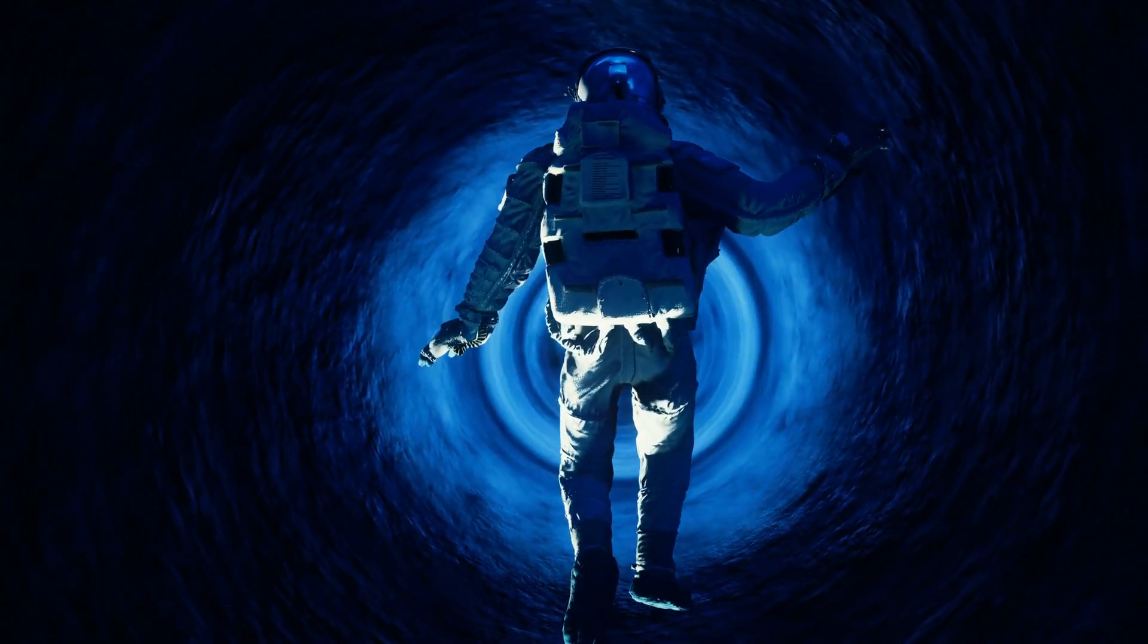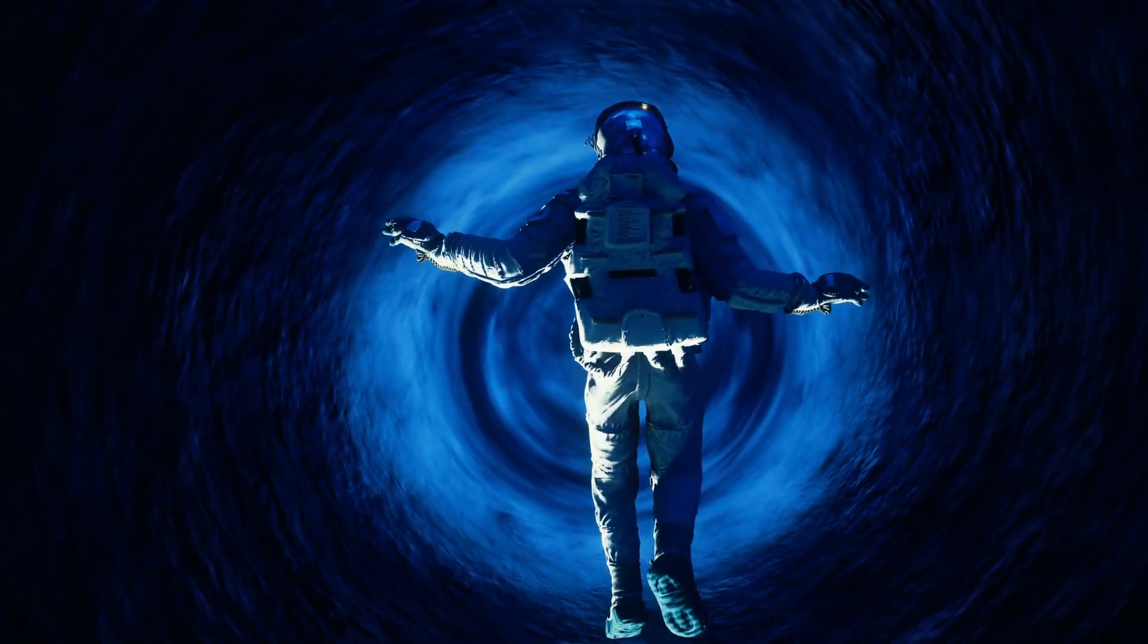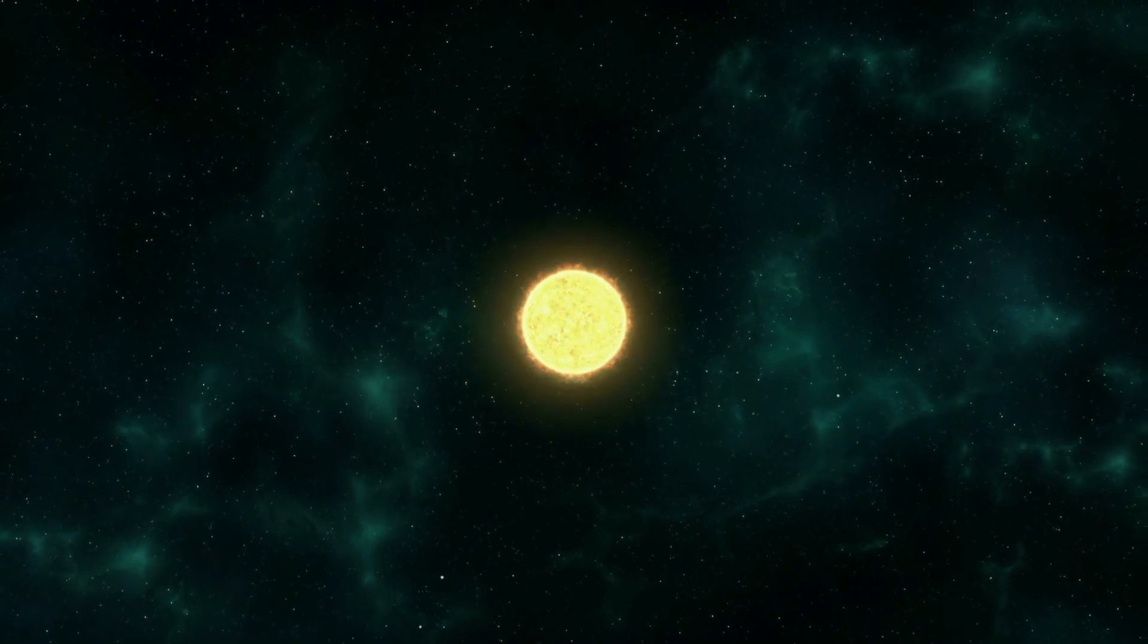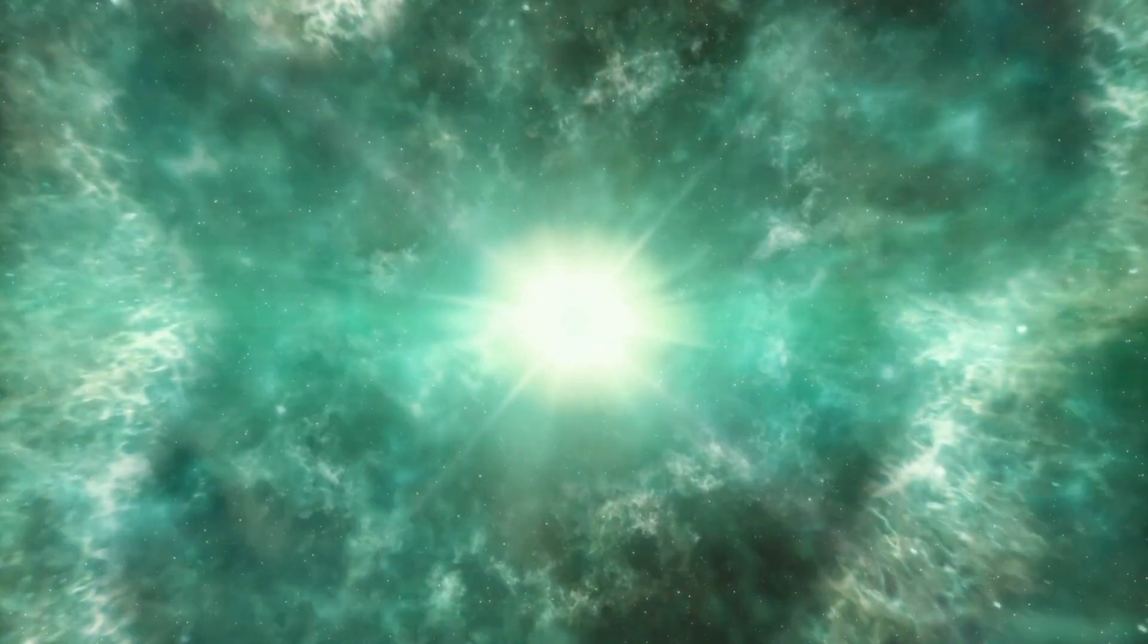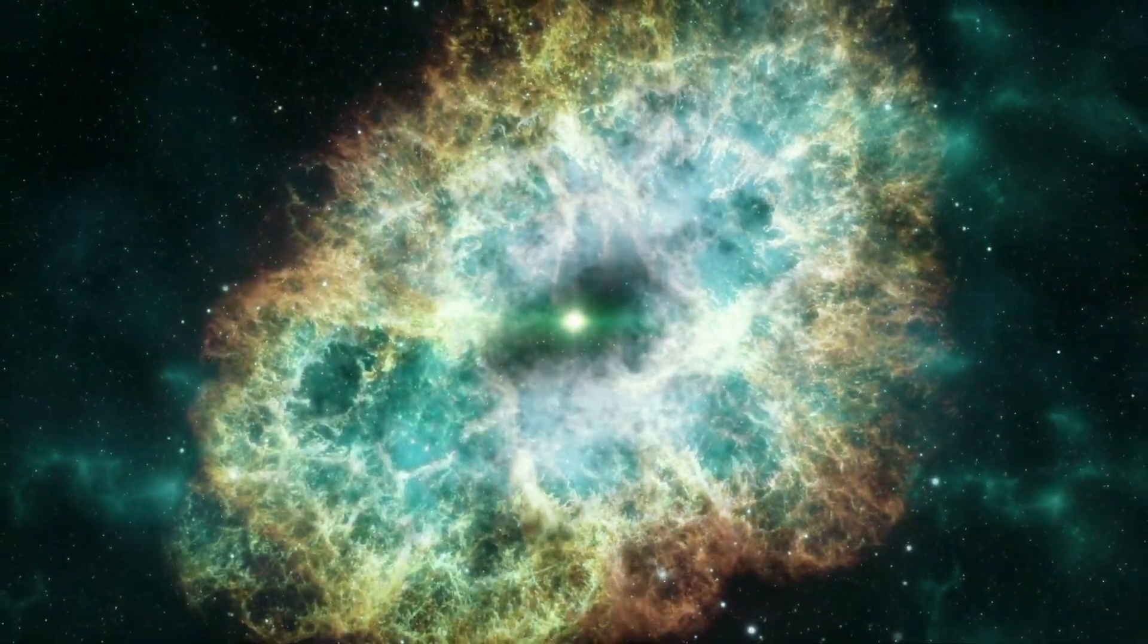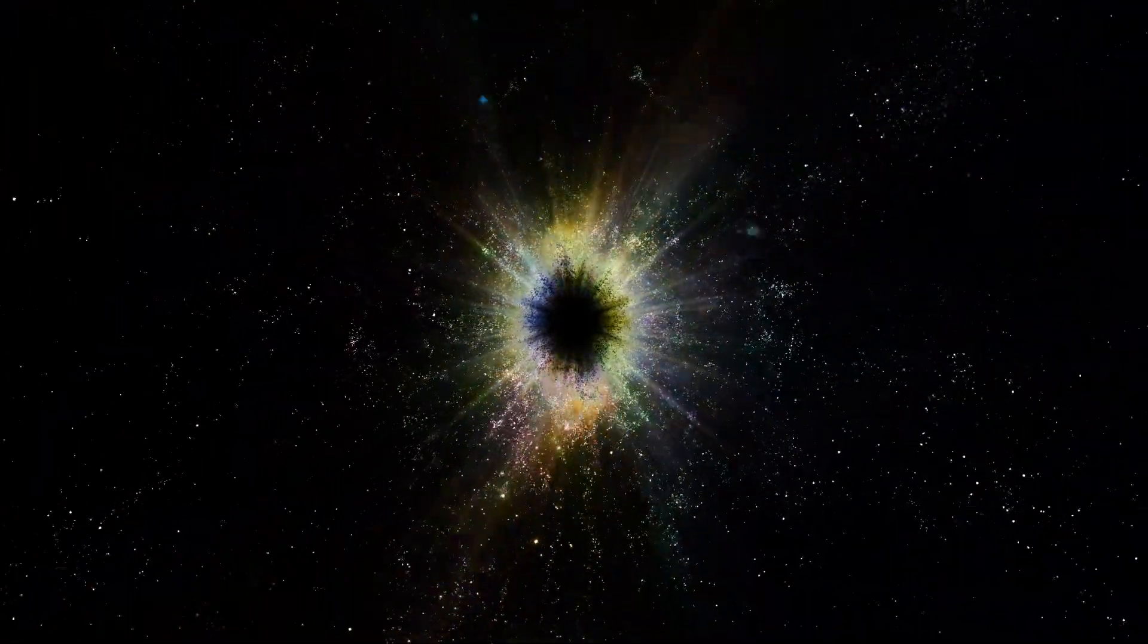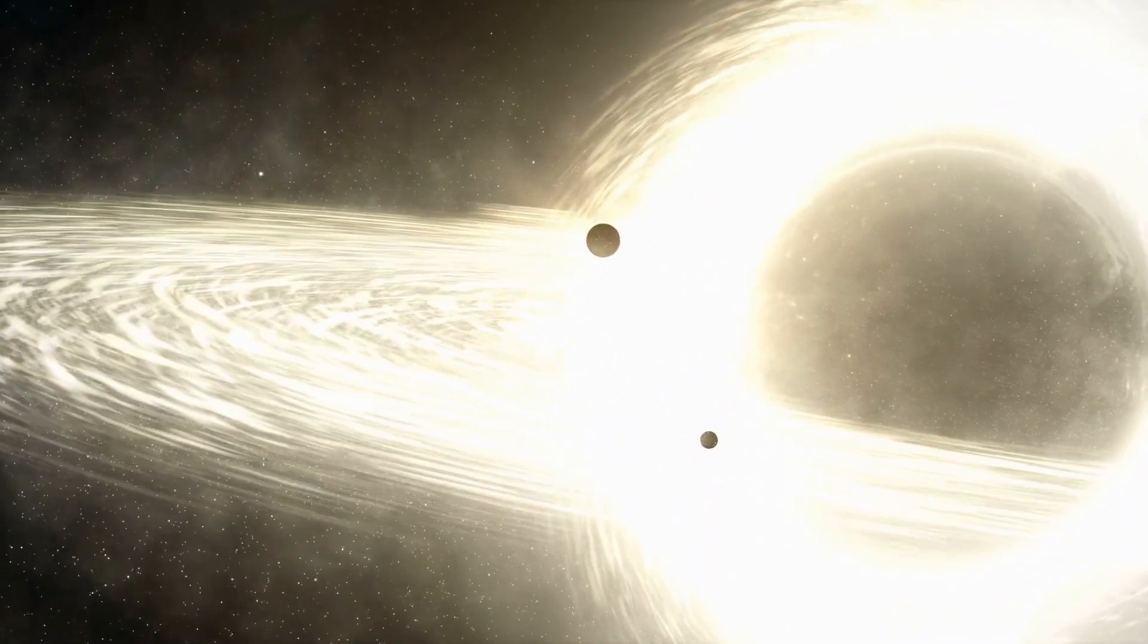A black hole is a region in space where gravity is so intense that nothing, not even light, can escape its gravitational pull. It is formed when a massive star collapses under its own gravitational force during a supernova explosion. The matter is squeezed into an incredibly small and dense point called a singularity, surrounded by an event horizon, the boundary beyond which nothing can escape.